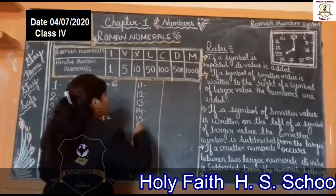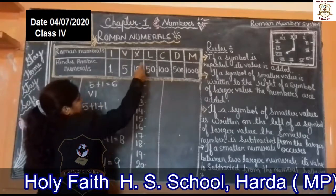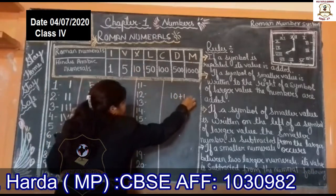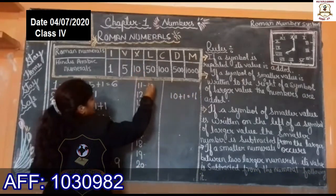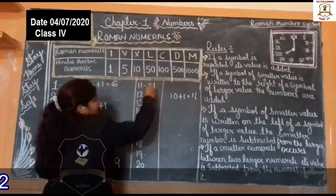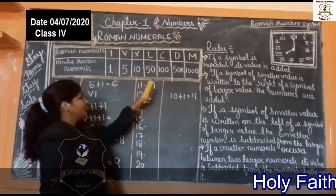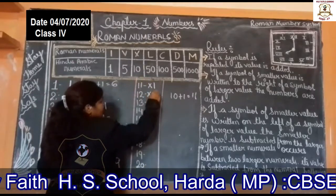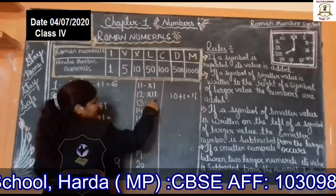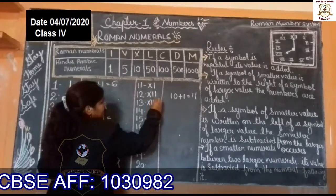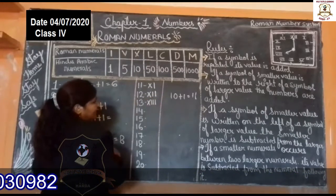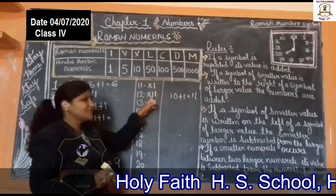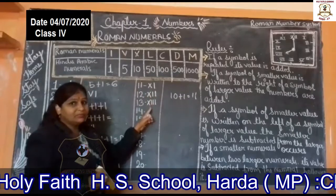Now 11: 10 plus 1 is equal to 11, so this is the Roman numeral for 11. Now, 10 plus 2 is 12, and 10 plus 3 is 13.